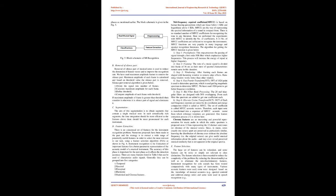There are many features listed in Table I that can be used to characterize audio signals, generally grouped into five categories: (1) Temporal, (2) Spectral, (3) Perceptual, (4) Harmonic, and (5) Statistical and Chroma Features. Mel-Frequency Cepstral Coefficients (MFCC) are based on human hearing perceptions which are linear below 1 kHz and logarithmic above 1 kHz. MFCCs represent the spectral information of a sound in compact form. Experiments showed that 8 to 14 MFCC coefficients are sufficient to recognize the instruments.